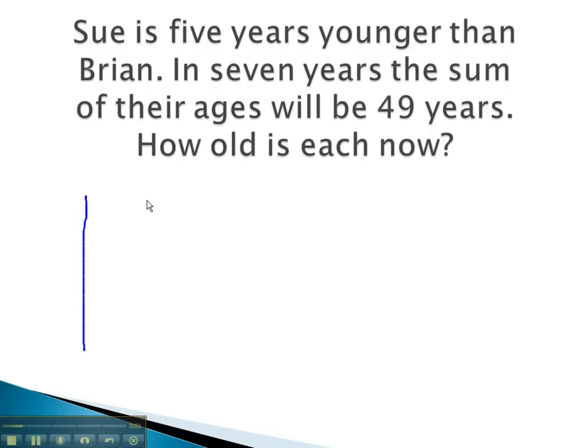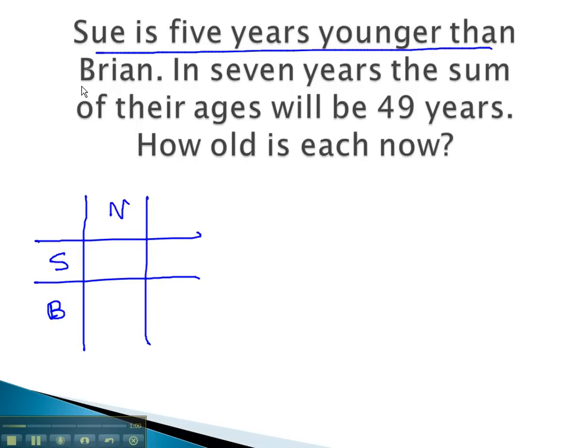Here, we see that we are comparing two people, Sue and Brian. Right now, we see that Sue is five years younger than Brian. This tells us nothing about Brian, so he will be our variable. Sue is five years younger. To show five years younger than x, we simply have to subtract 5 from x.